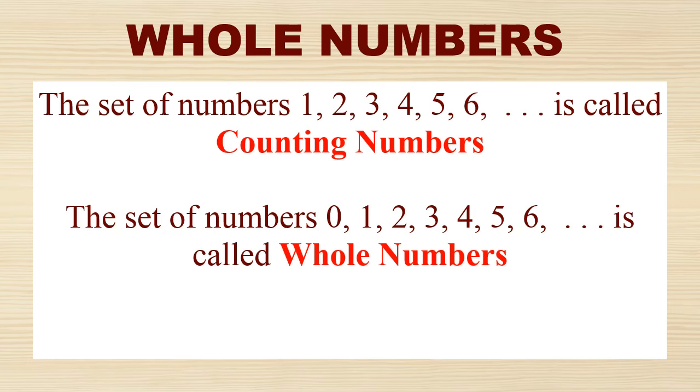The set of numbers 1, 2, 3, 4, 5, 6 and the rest of it is called counting numbers. While the set of numbers 0, 1, 2, 3, 4, 5, 6 is called whole numbers. That is, counting numbers including 0 is called whole numbers.